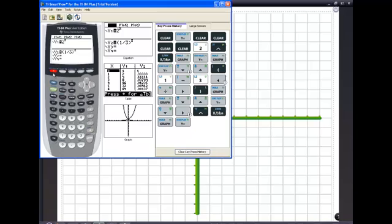So, I put in y equals 2 to the x, and I put in y equals 1 third to the x. And if you look close, here's y equals 2 to the x. It's already been graphed.